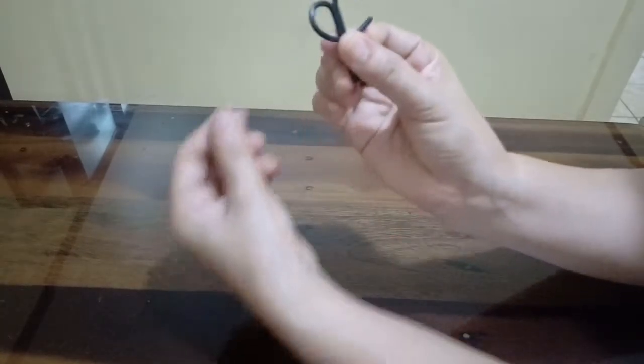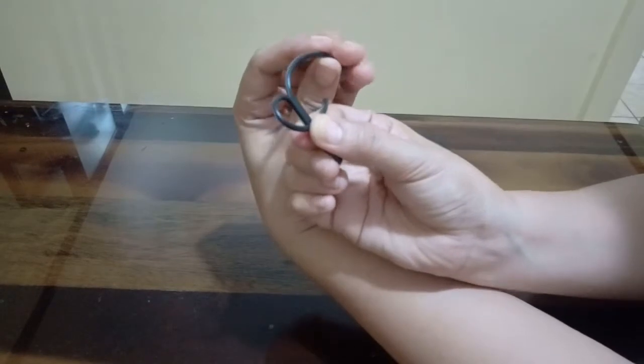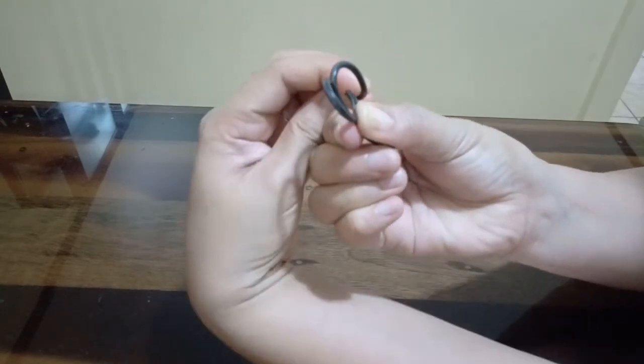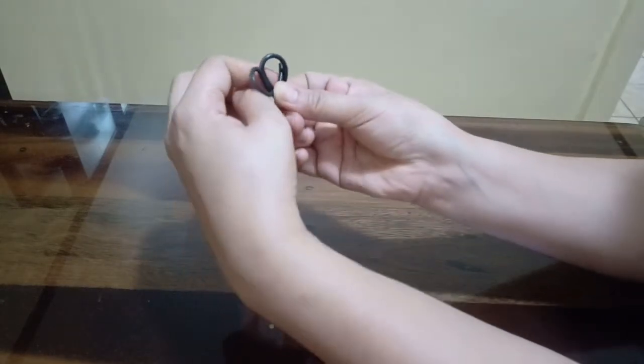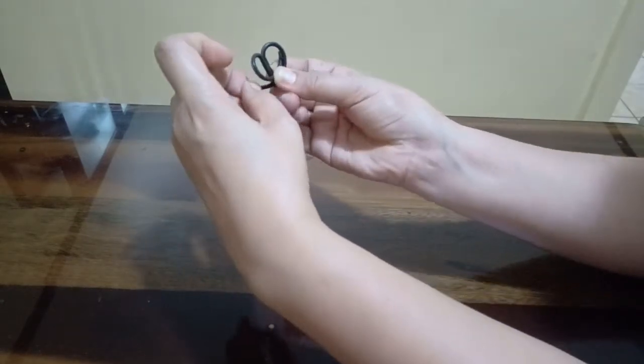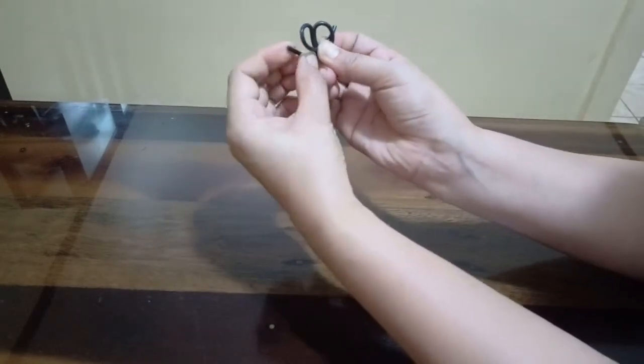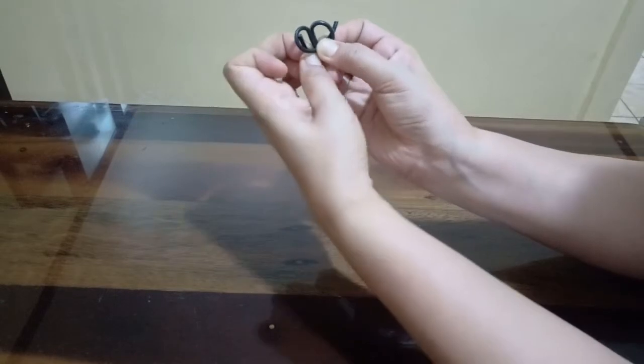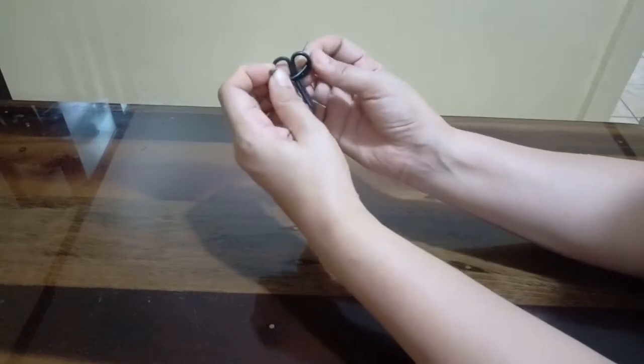Now, the left side. We are going to put it over the first loop and insert it over the first loop, just like this. And then, we are going to pull the wire.